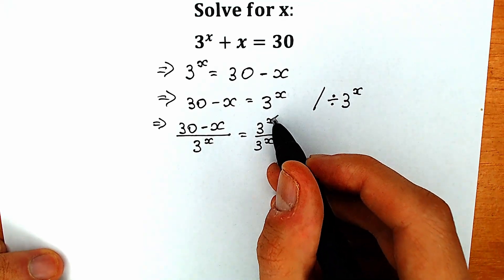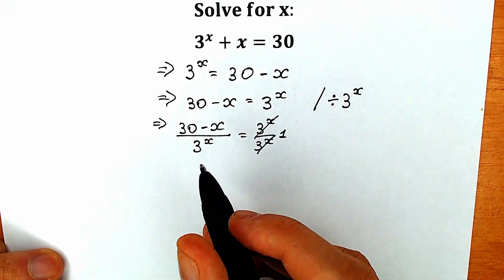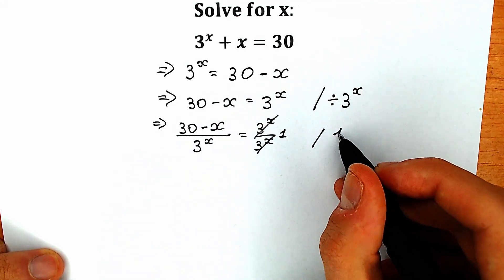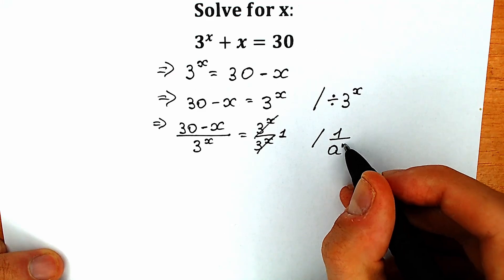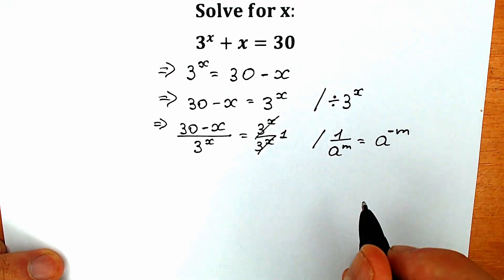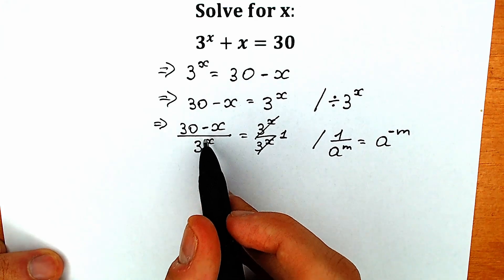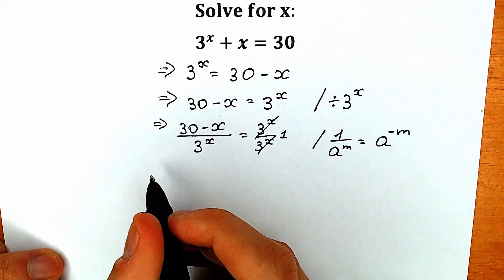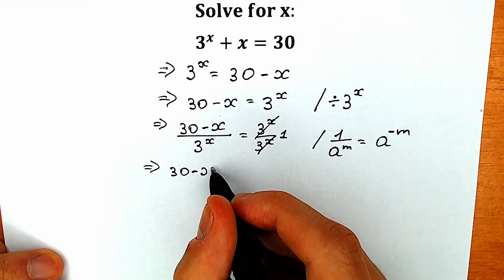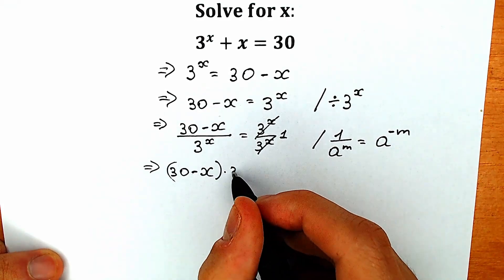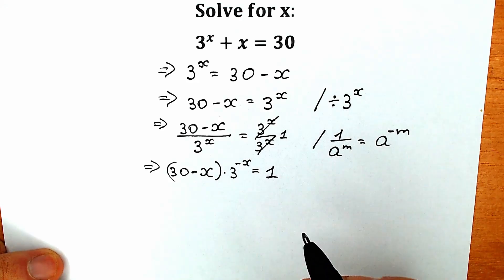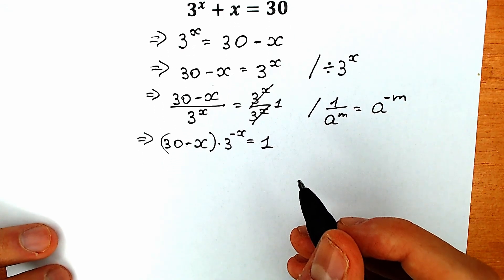On the left side, I'm going to bring 3 to the x from the denominator to the numerator. We need to know an important property: 1 over a to the power m can be written as a to the power minus m. So as a result we have 30 minus x times 3 to the power minus x equal to 1.